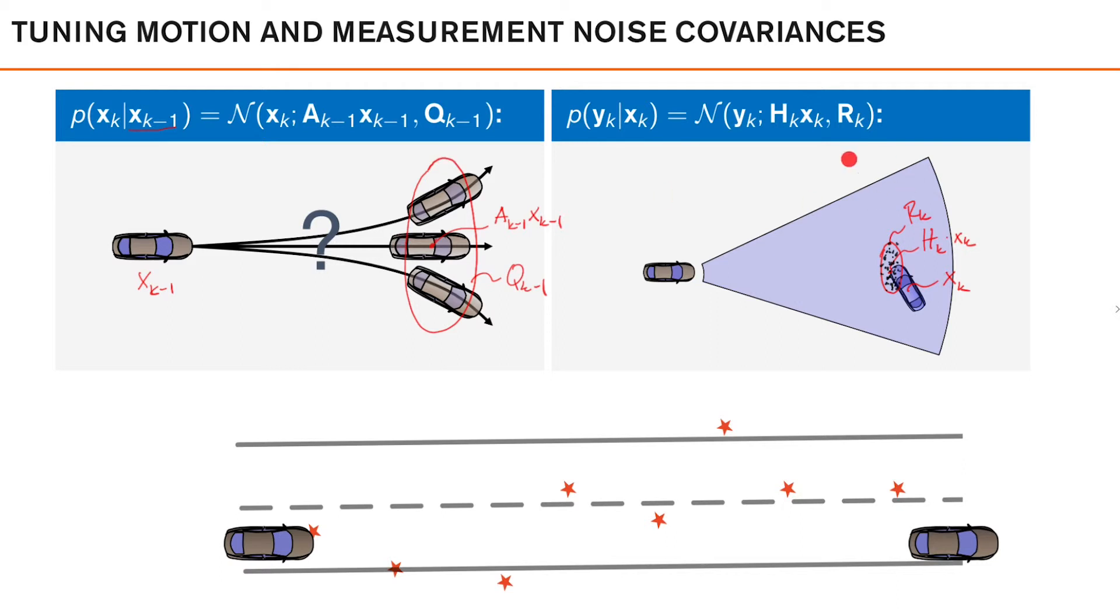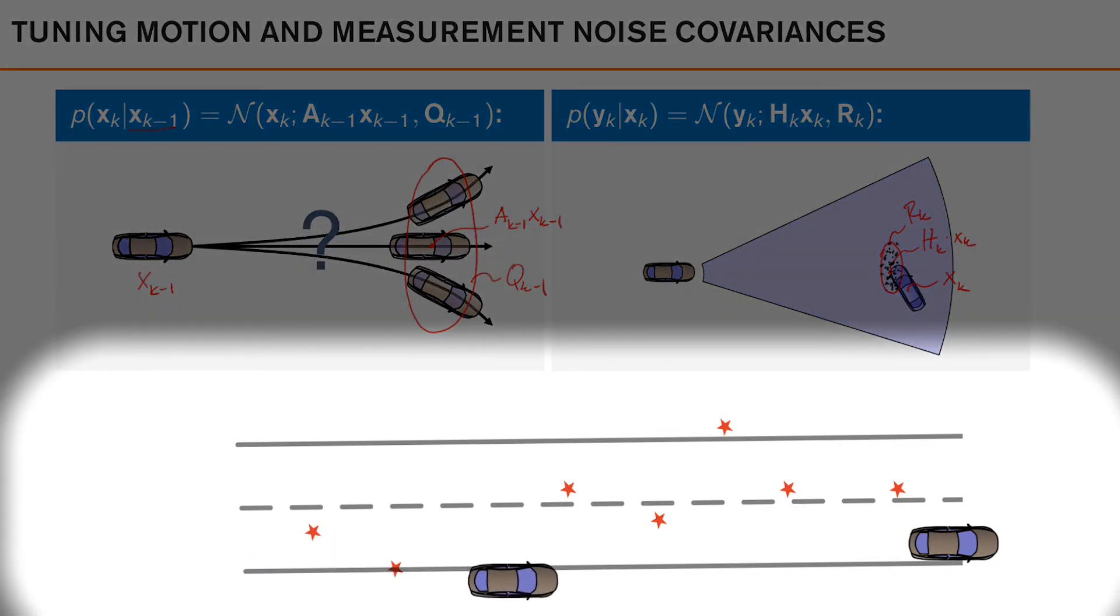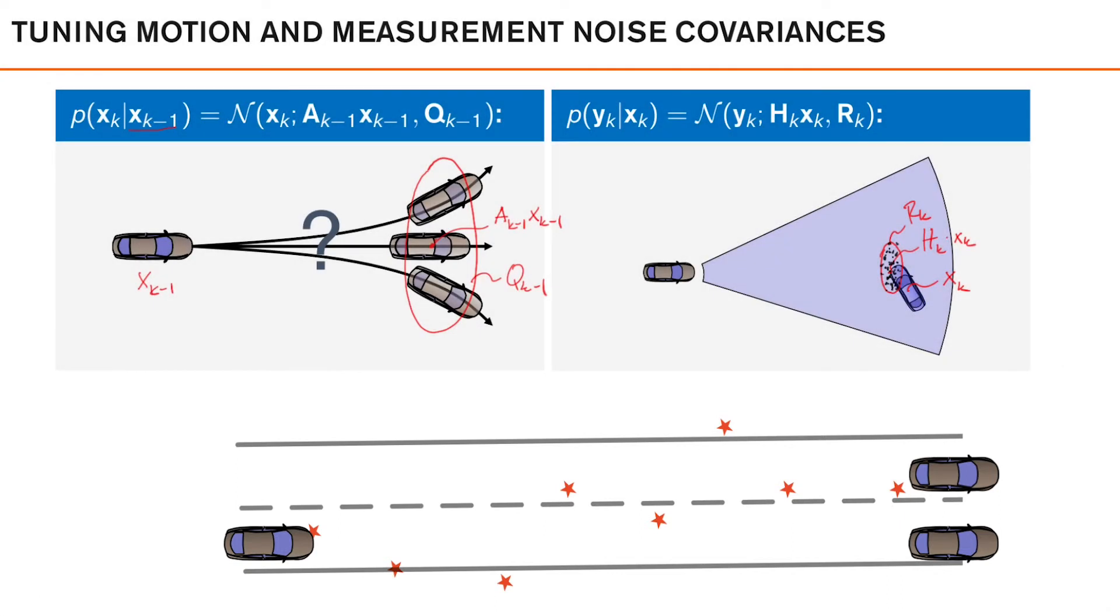If we instead choose a too small measurement noise covariance, rk, this will mean that we are telling the filter that the measurements are very informative. What happens now is that the filter will trust the measurements too much and we will not have a very car-like filter trajectory due to that measurement noise will be transferred to the state estimates.